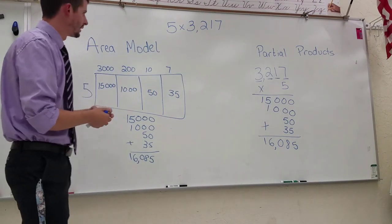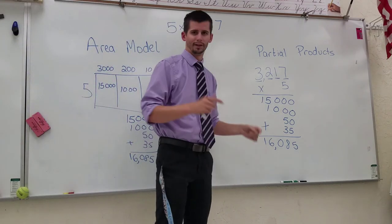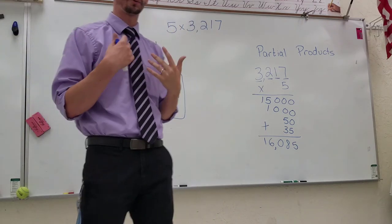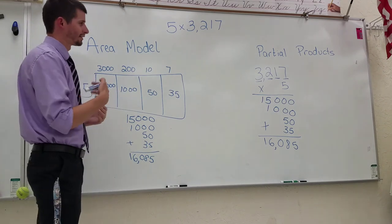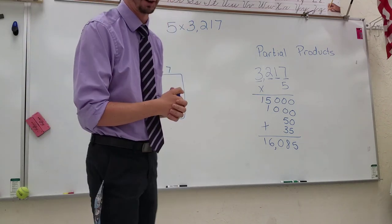So we're multiplying the same numbers. The only difference is instead of laying it out, now they're starting to do it in their heads. And this is how they can multiply faster than the standard algorithm because now it's being broken up in the place value and they can really see what's going on.